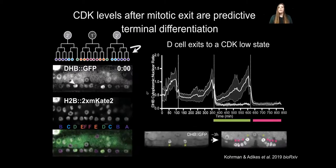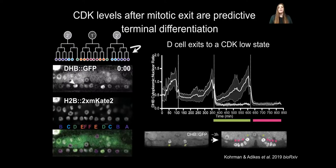Quantifying many cells from many animals, we can see that during this cell division the D cells exit at a CDK-low, DHB-ratio-low state, whereas the sister and cousin cells go to a CDK-increasing state as they will divide again before they terminally differentiate. The D cells have a high amount of sensor in the nucleus compared to the cytoplasm, meaning they have terminally differentiated, whereas the sister cells continue through the cell cycle and later divide and terminally differentiate, accumulating the sensor in the nucleus.